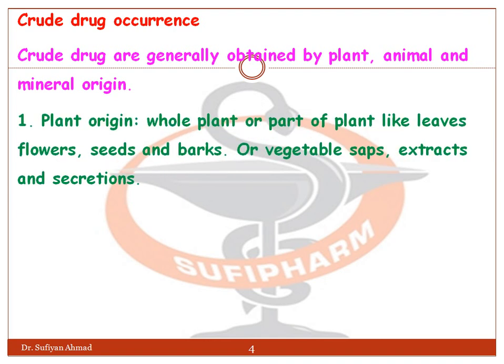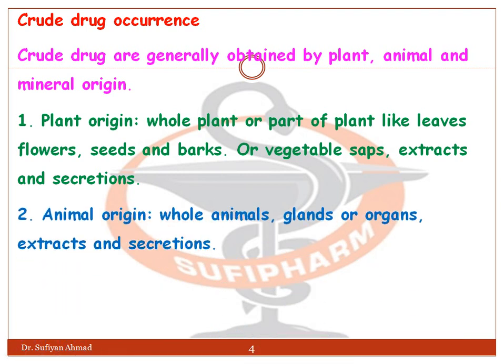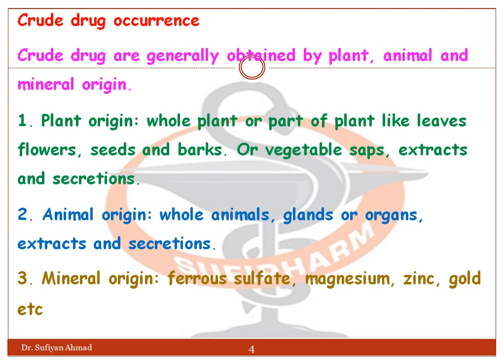Plant origin: the whole plant or part of the plant like leaves, flower, seed, and bark are used, or vegetable sap, extracts, and secretions. Animal origin: the whole animal, gland or organ extracts and secretions.